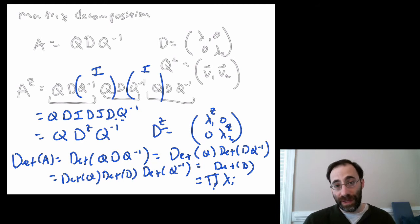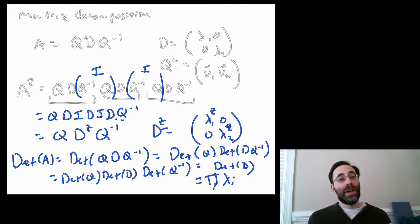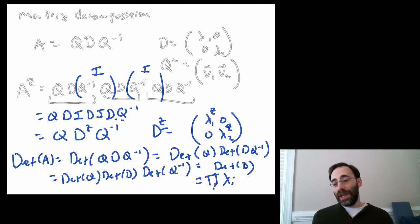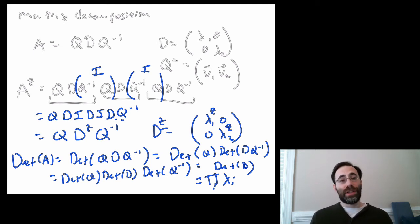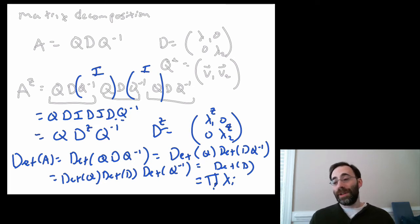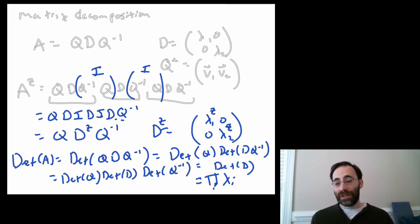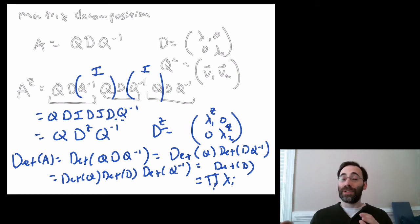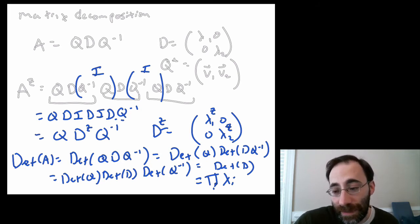So here's one use of spectral decomposition: it helps us take powers of matrices — including things like square roots — and also take determinants more easily. This is not the most common use in political science or the social sciences generally; the most common use involves principal component analysis, which we'll get to now.